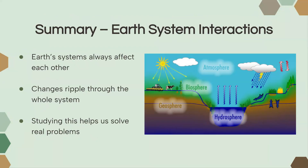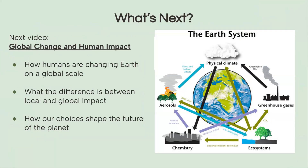In summary, Earth's systems always affect each other. One little change to one part of the Earth's systems can have multiple changes to other parts of the systems. Humans have a huge role to play — we are always interacting with our environment and all these different systems, causing changes with our human activities. Studying Earth's systems and their interactions can help us solve real world problems. Next, we'll talk about global change and human impact: how humans are changing Earth on a global scale, the differences between local and global impacts, and how our choices shape the future of the planet.